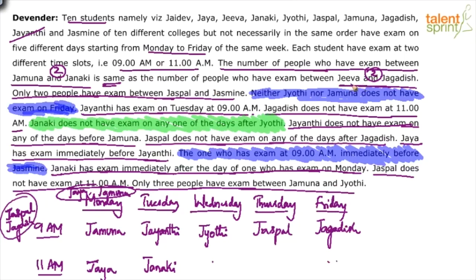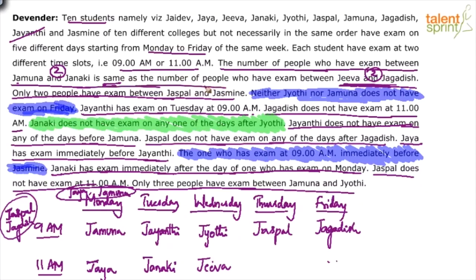Now with Jagdish at 9am Friday, there have to be two people between Jeeva and Jagdish. Two slots before Jagdish are 11am Thursday and 9am Thursday, so Jeeva will come at 11am Wednesday. For Jaspal and Jasmine with two people between them: Jaspal is at Thursday 9am, so counting one and two slots after, Jasmine would come at 11am Friday. Jaya is already placed, so Jayadev fills the last remaining slot.